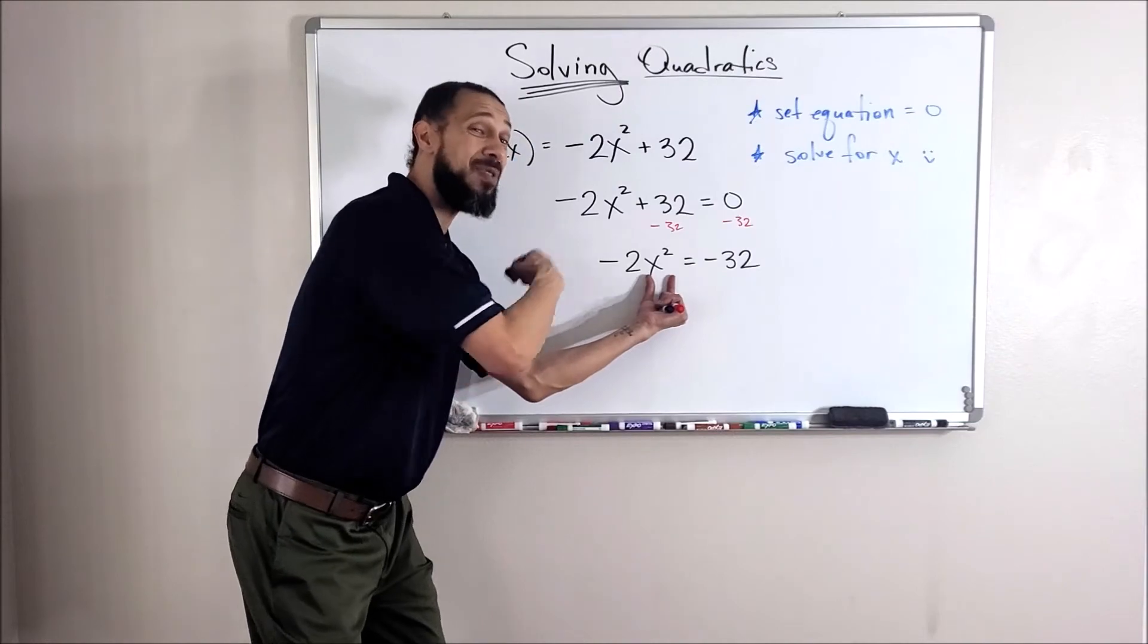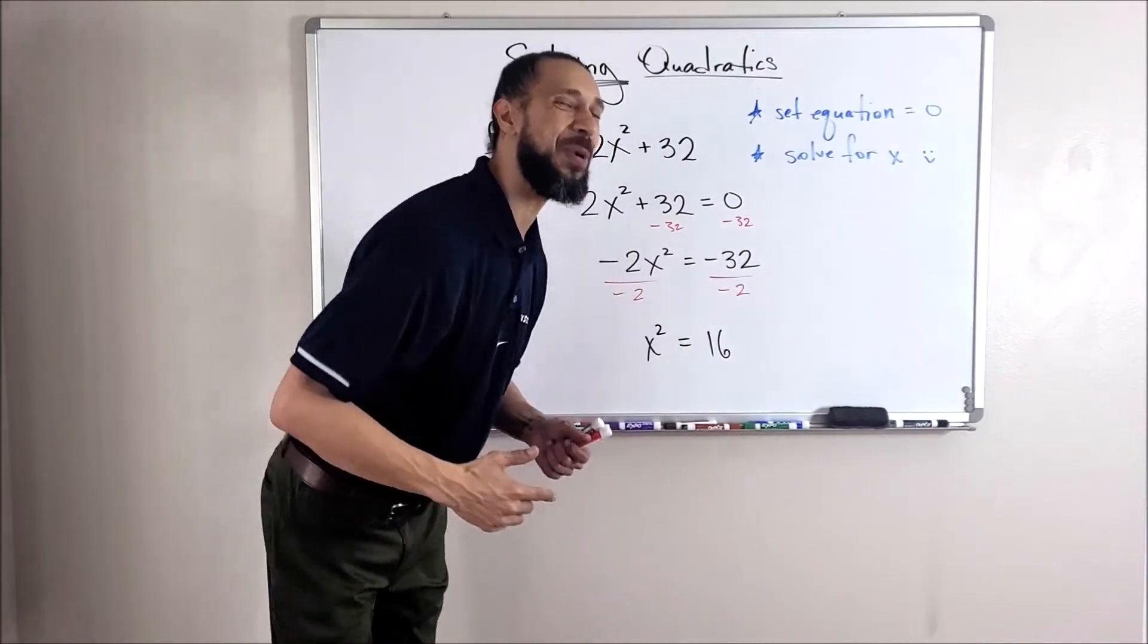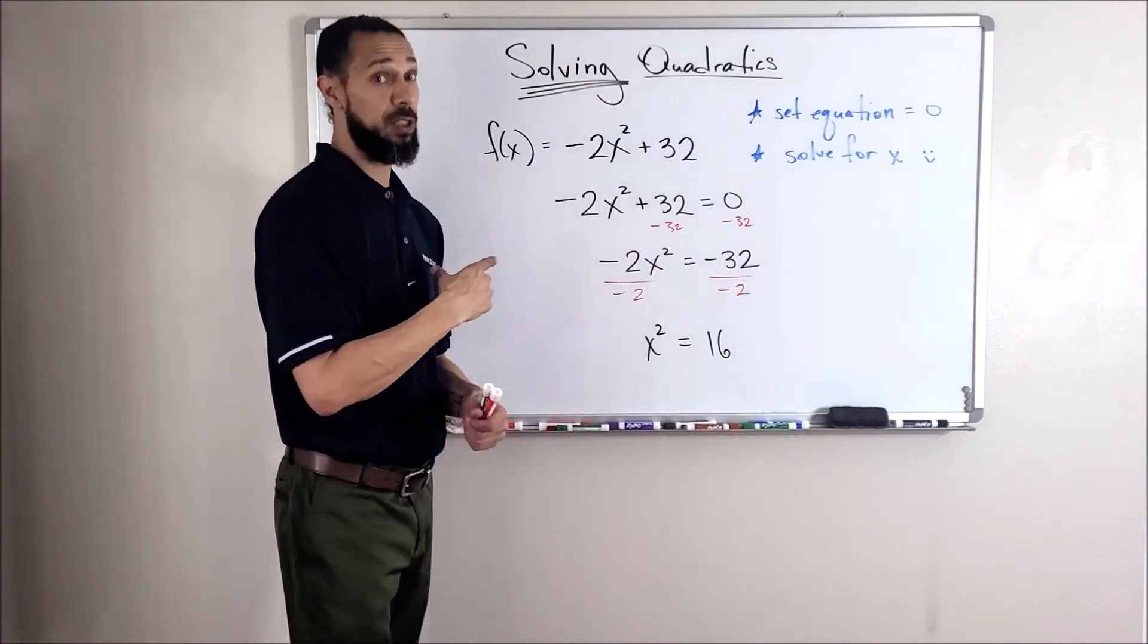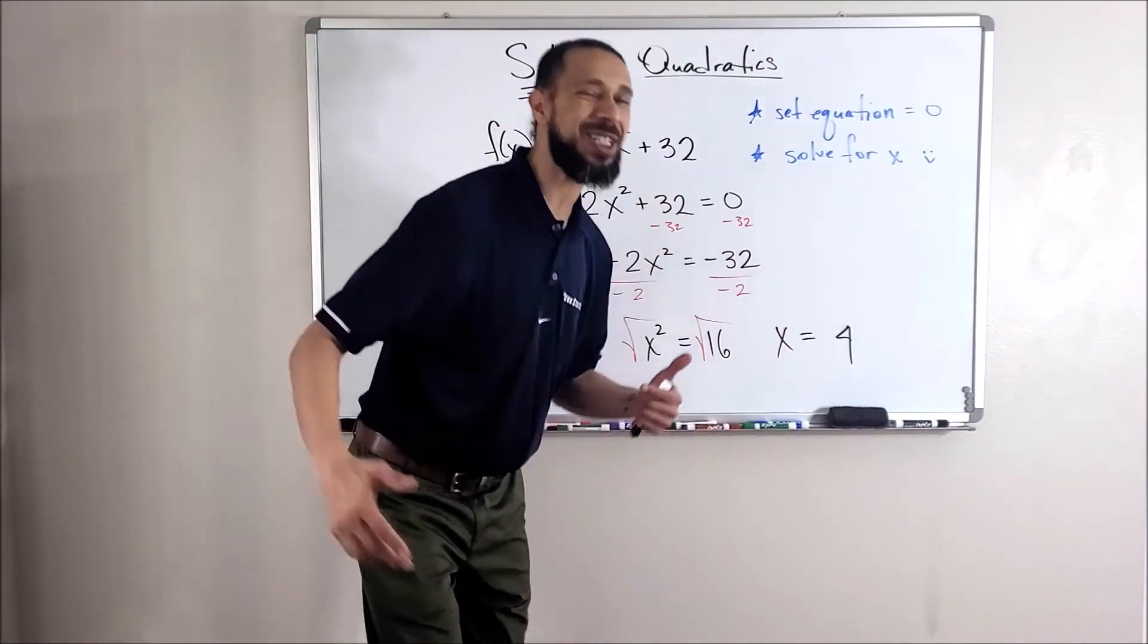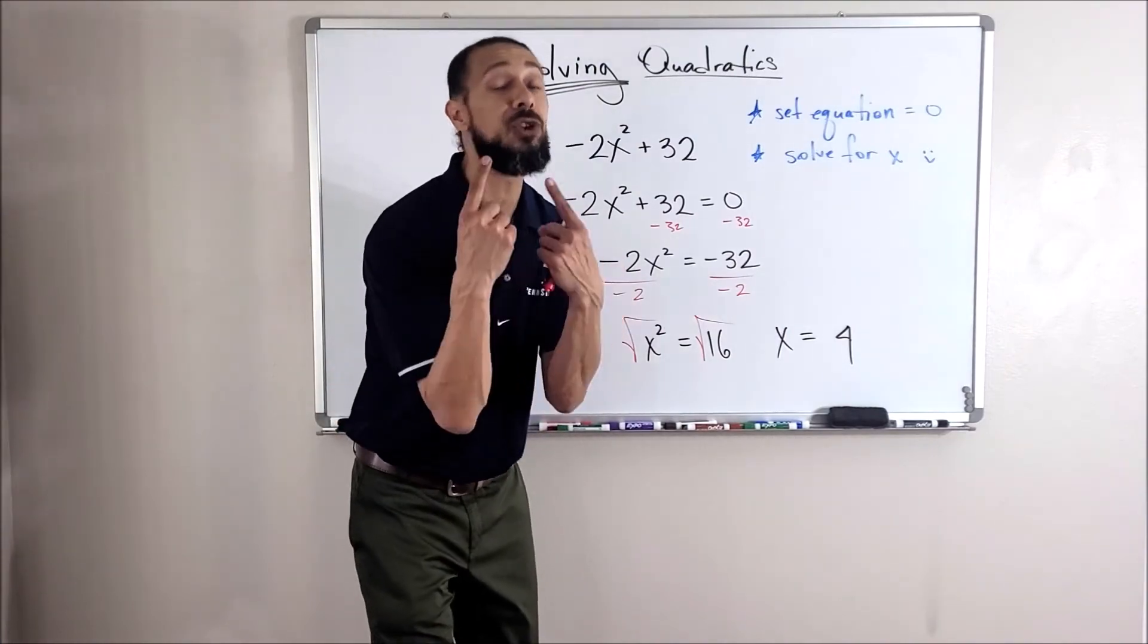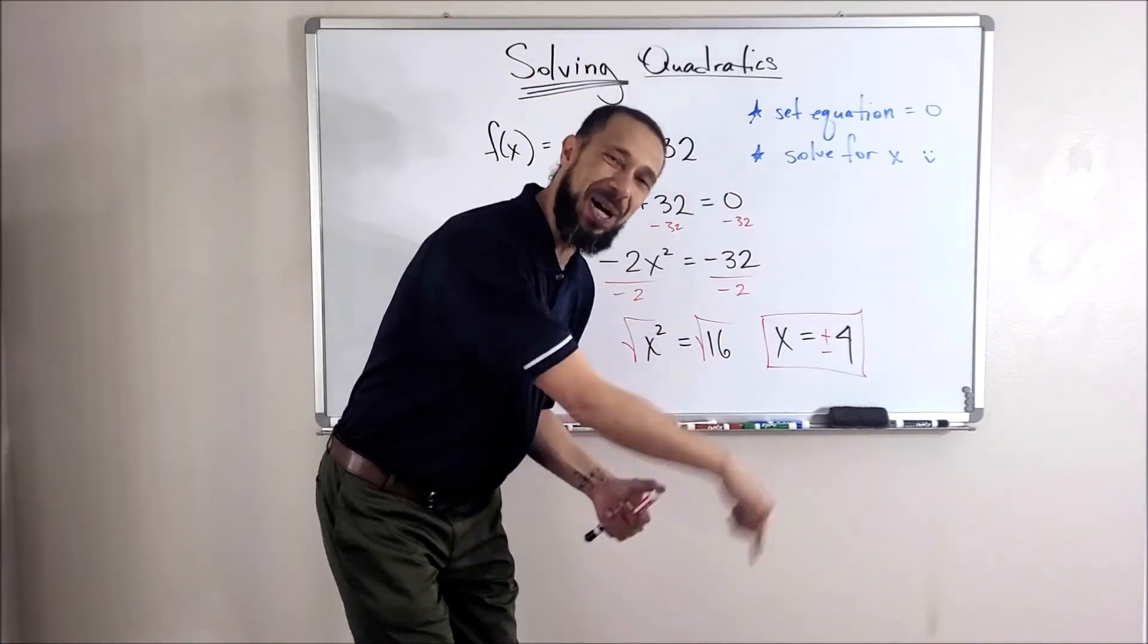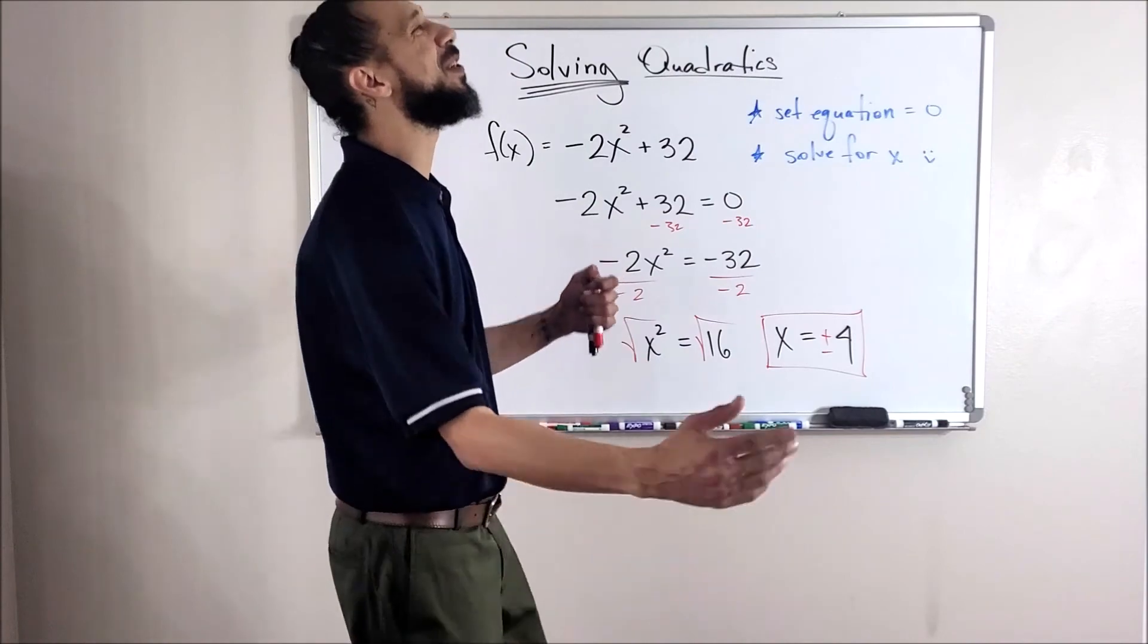Now there's one thing left stopping this x-squared from being alone so I can do my square root. Negative two times. To undo that, divide by negative two, both sides. Leaves me here, ready for the square root. And of course, the square root of 16 is 4, but don't forget the plus or minus.